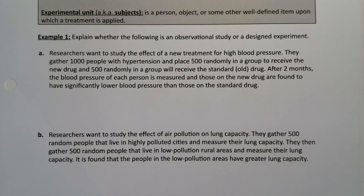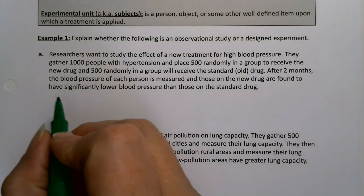Let's explain whether the following is an observational study or a designed experiment. Researchers want to study the effect of a new treatment for high blood pressure. They gather 1,000 people with hypertension and place 500 randomly in a group to receive the new drug and 500 randomly in a group that will receive the old standard drug. After two months, the blood pressure of each person is measured and those on the new drug are found to have significantly lower blood pressure. That's completely a designed experiment.